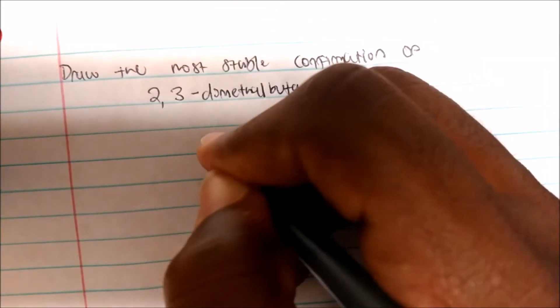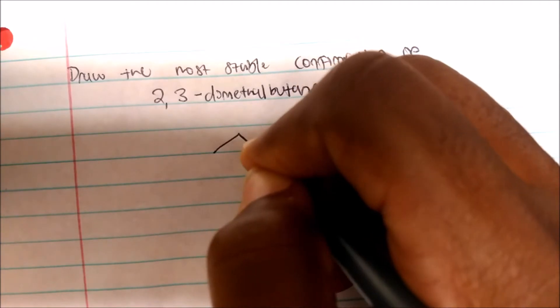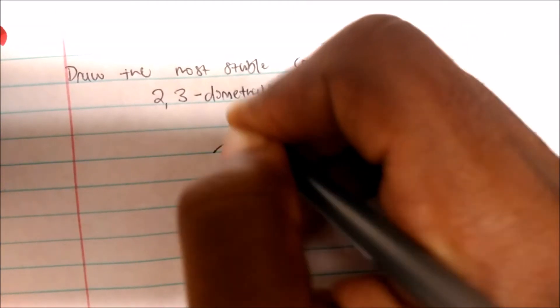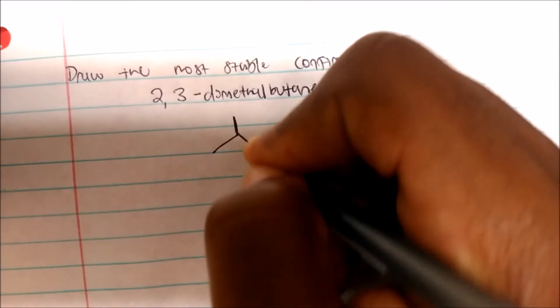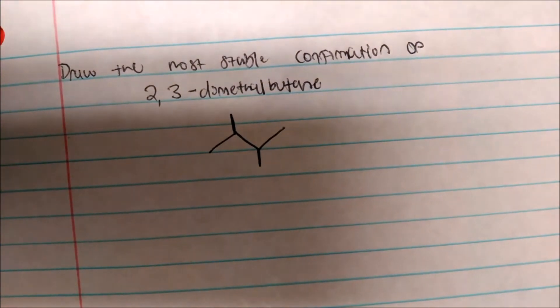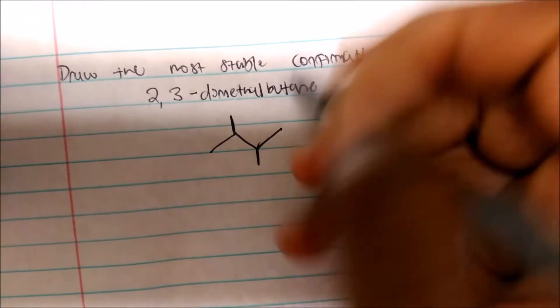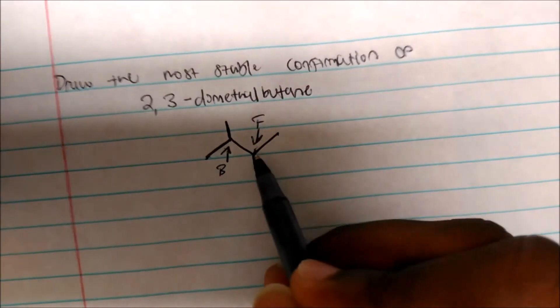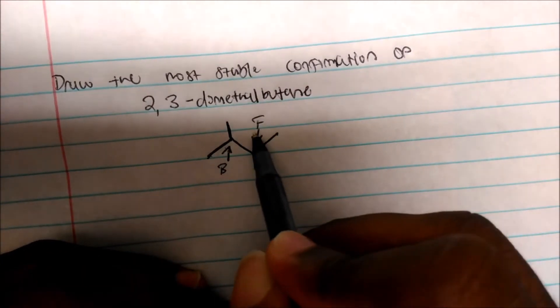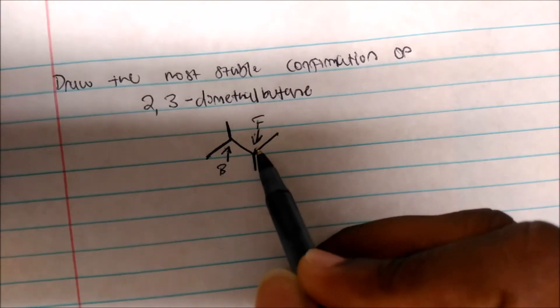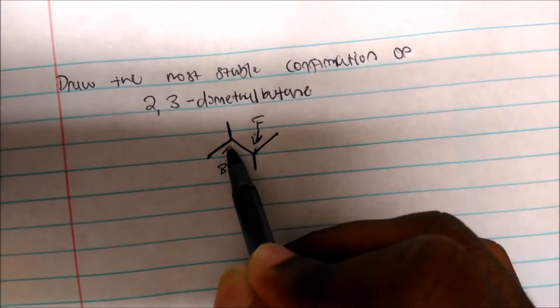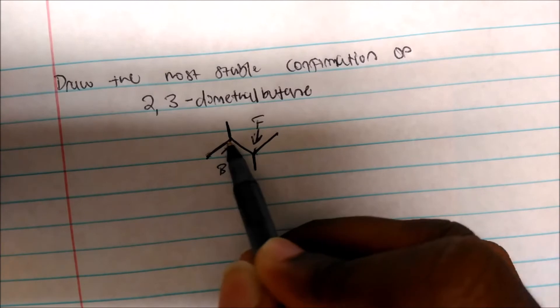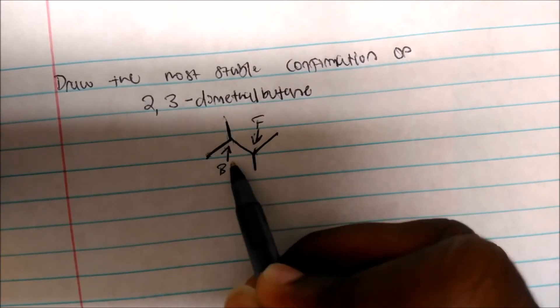So again, butane is my parent, so 2, 3, 4, right? On the carbon 2, I have a methyl, on the carbon 3, I also have a methyl. So that is my structure. I'm going to call this my front carbon, I'm going to call this my back. To my front carbon, I have 2 methyl groups and 1 hydrogen. Hydrogen is not shown, but it's there. On the back carbon, also, I have 2 methyl groups and 1 hydrogen.